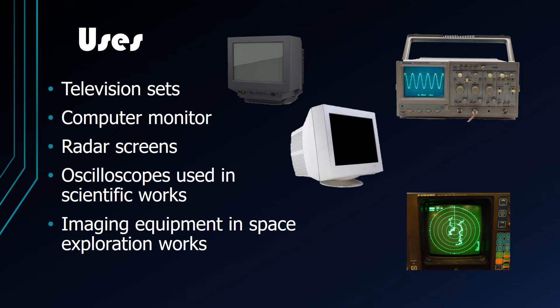The primary advantage that CRT monitors hold over LCDs is color rendering. The contrast ratios and depths of color displayed on CRT monitors are better than what an LCD can render. Hence, CRTs are still used today in radar screens, oscilloscopes used in scientific work, and imaging equipment used in space exploration.